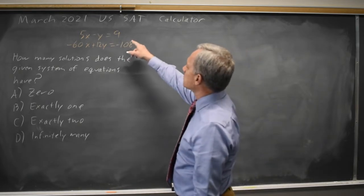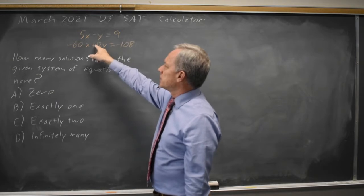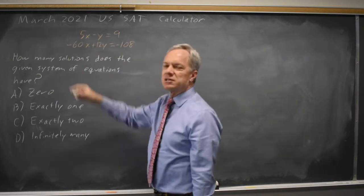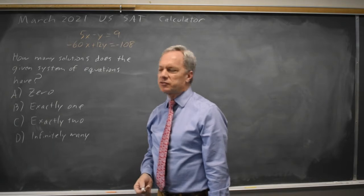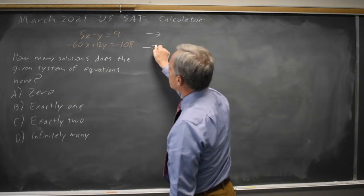These are both linear and I notice that the y coefficient is multiplied by negative 12, the x coefficient is multiplied by negative 12. Let's divide the second equation through by negative 12.